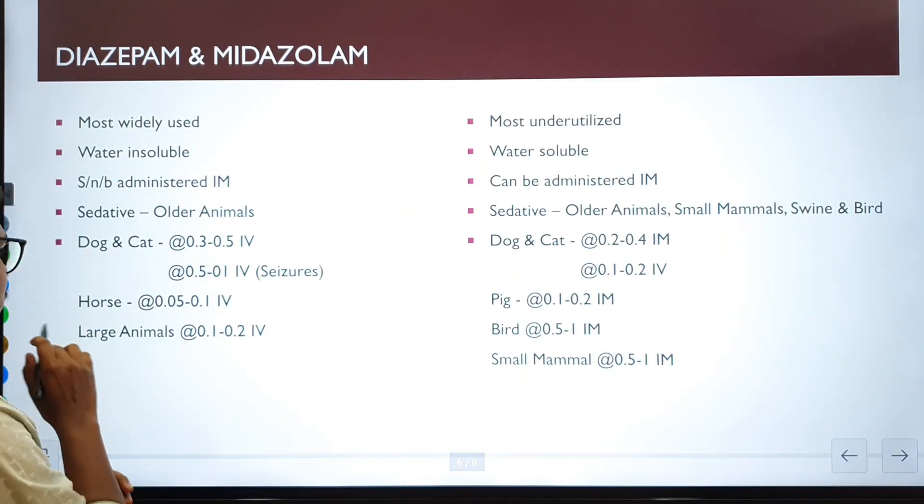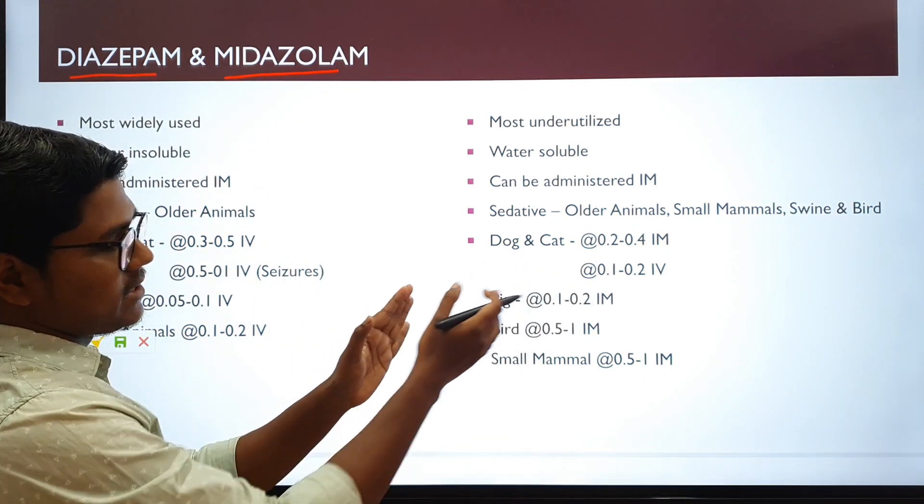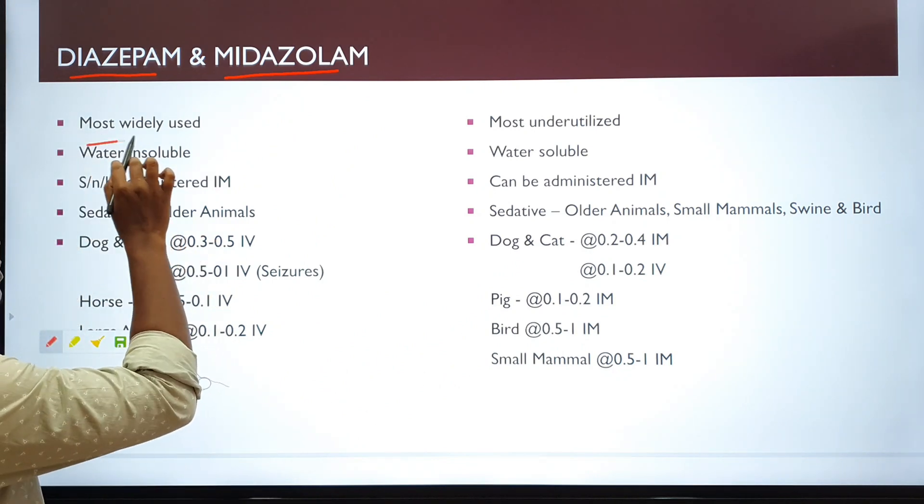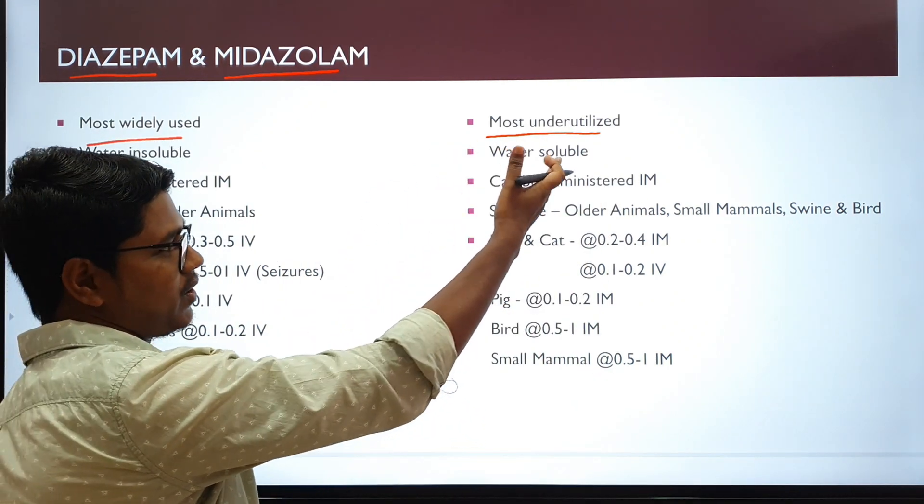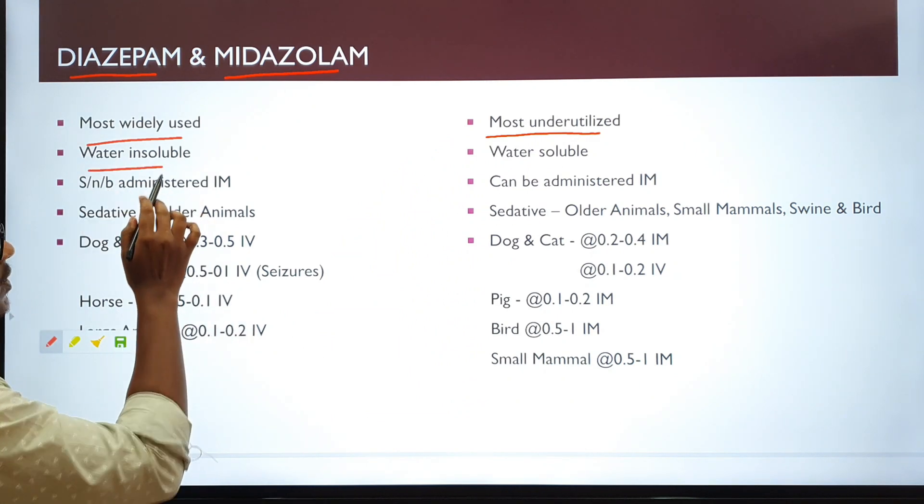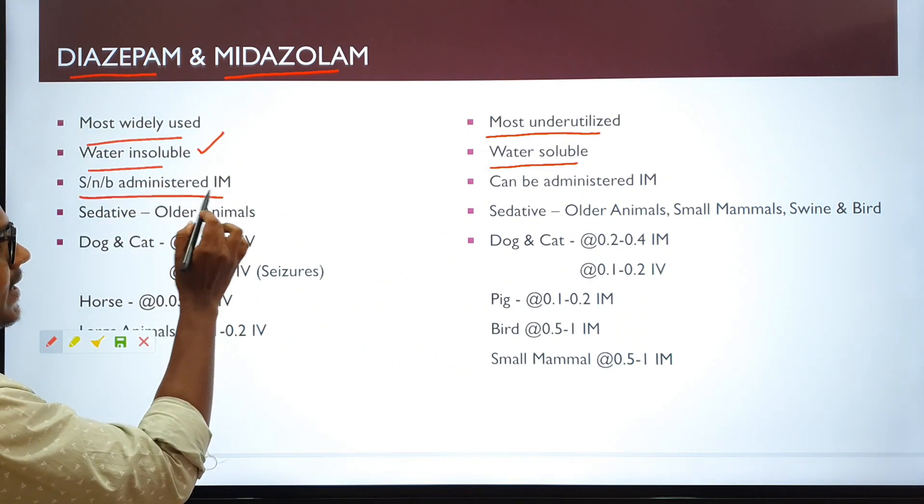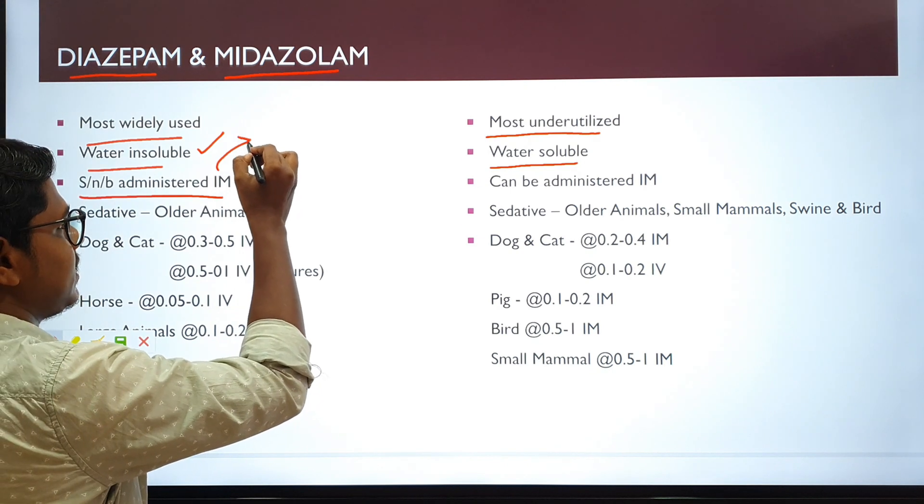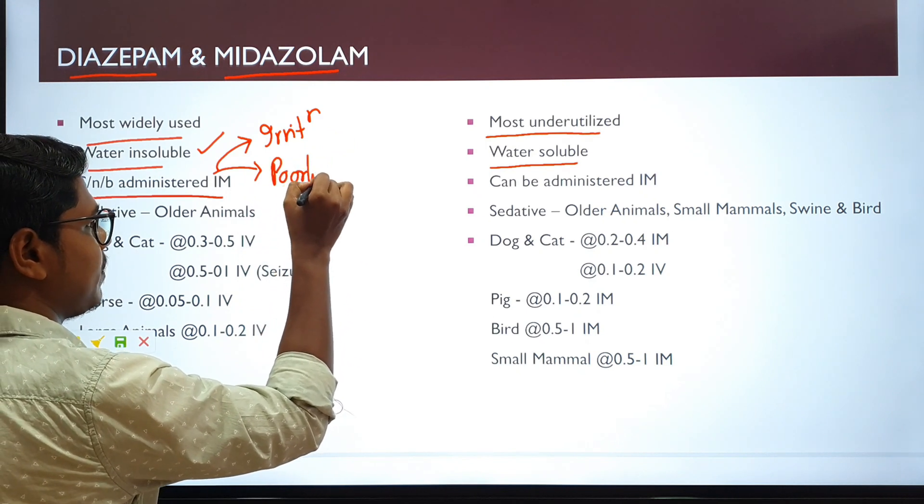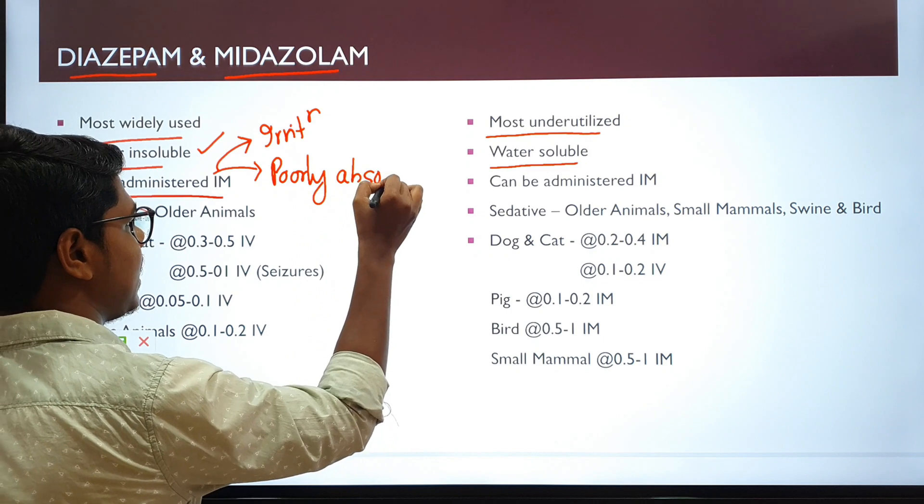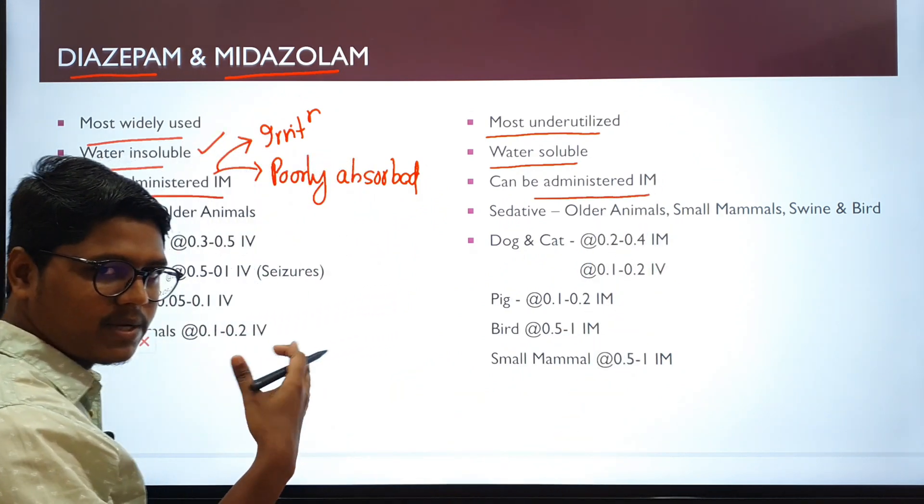Now, coming to the comparison. The two commonly available drugs: diazepam and midazolam. The left-hand side is diazepam, right-hand side is midazolam. Diazepam is most widely used, while in contrast, midazolam is most underutilized, though they are nearly equally potent. Diazepam is water insoluble, while midazolam is water soluble. Being water insoluble, diazepam should not be administered IM, intramuscularly. When administered intramuscularly, they cause irritation or pain, and they are poorly absorbed. So the bioavailability reduces. In contrast, midazolam is water soluble, so they can be administered intramuscularly.